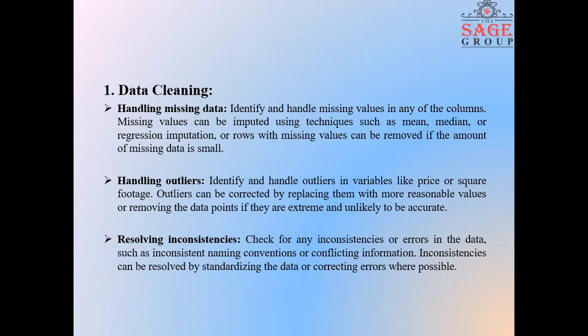Second is handling the outliers. Identify and handle outliers in variables like price or square footage. Outliers can be corrected by replacing them with more reasonable values, or removing the data points if they are extreme and unlikely to be accurate. Next is resolving inconsistencies. Check for any inconsistencies or errors in the data, such as inconsistent naming conventions or conflicting information. Inconsistencies can be resolved by standardizing the data or correcting the errors where possible.